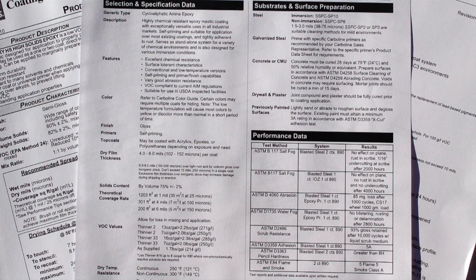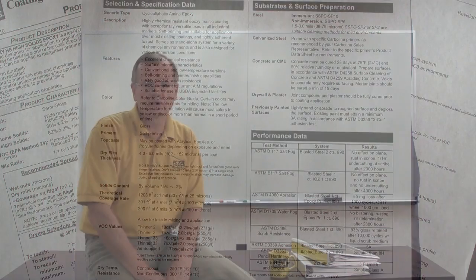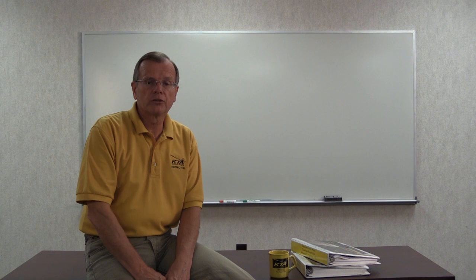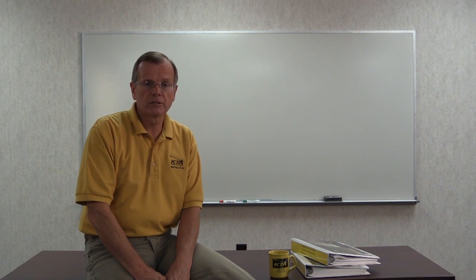The wet film thickness may be shown on the product data sheet, but this isn't always the case because it can vary depending on how much thinner is applied to the coating and the actual dry film that is being required by the specification. Therefore, it's important that you know how to calculate the target wet film thickness for both thinned and unthinned coatings.